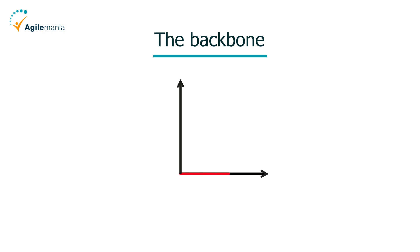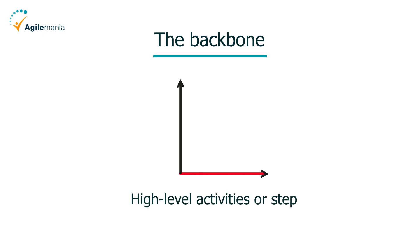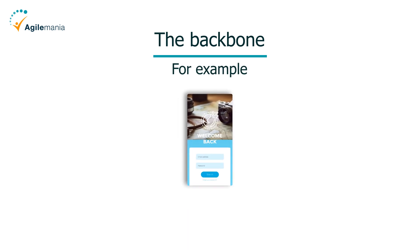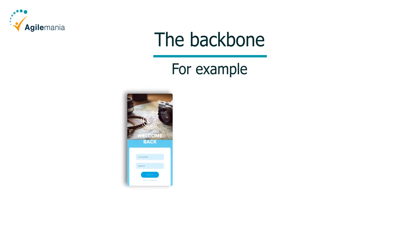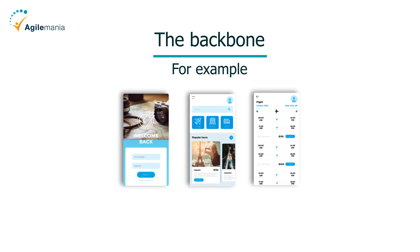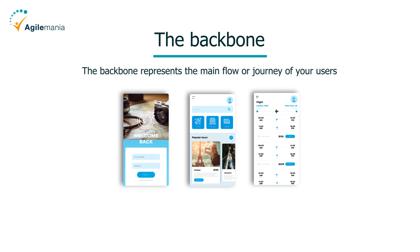A user story map consists of four main elements. The first is the backbone — the horizontal axis of the map, where you list the high-level activities or steps that your users perform with your product. For example, if you are building an online travel booking app, some of the activities could be: search for flights, compare prices, book tickets, check in online, etc. The backbone represents the main flow or journey of your users from start to finish.